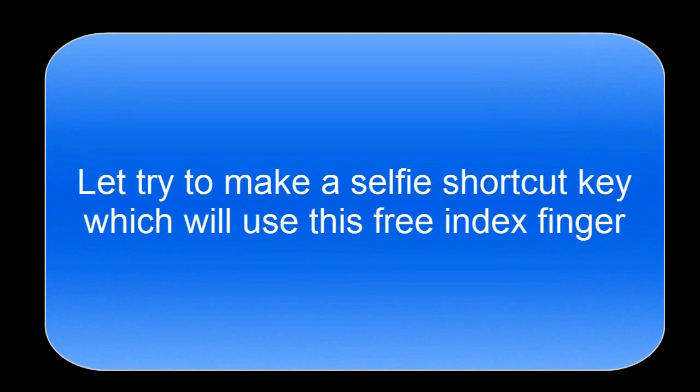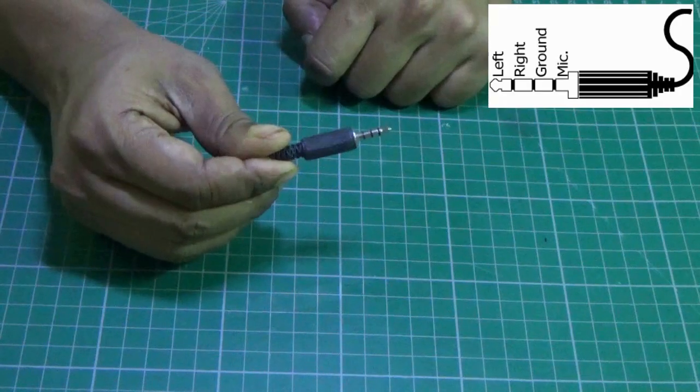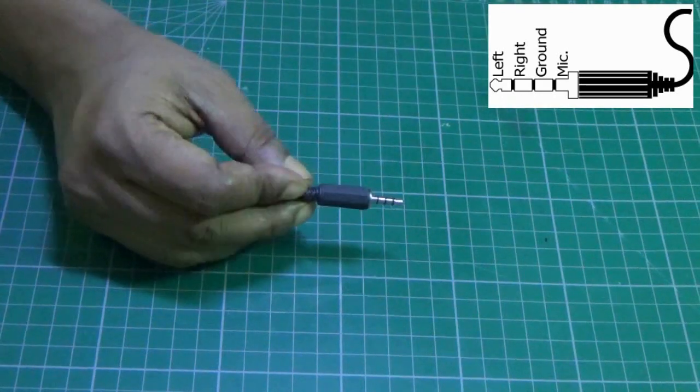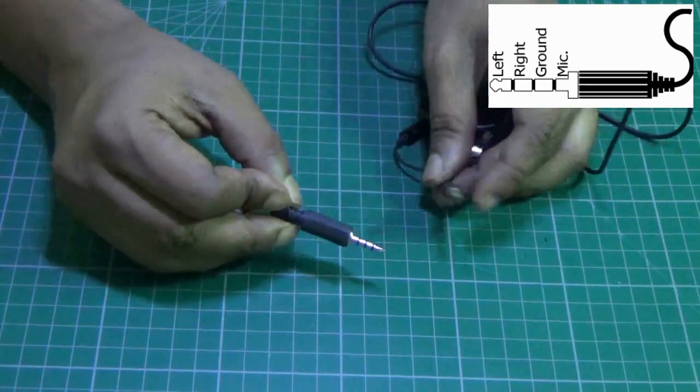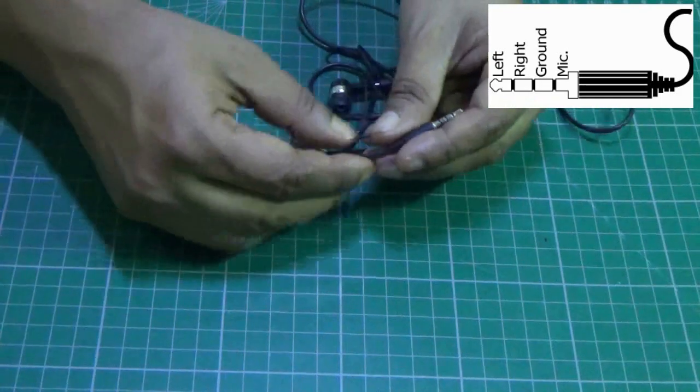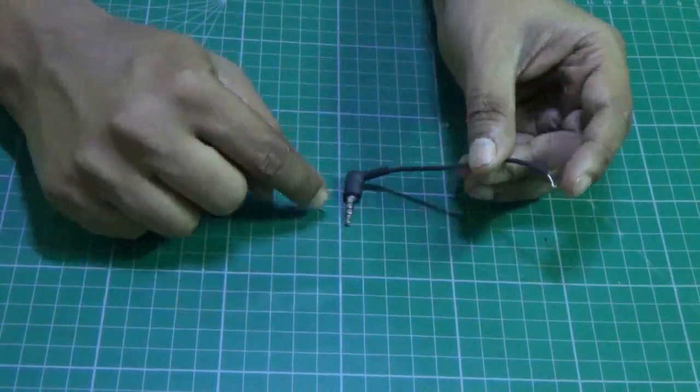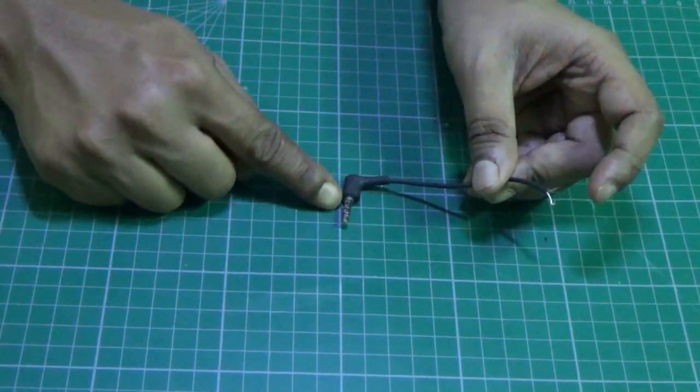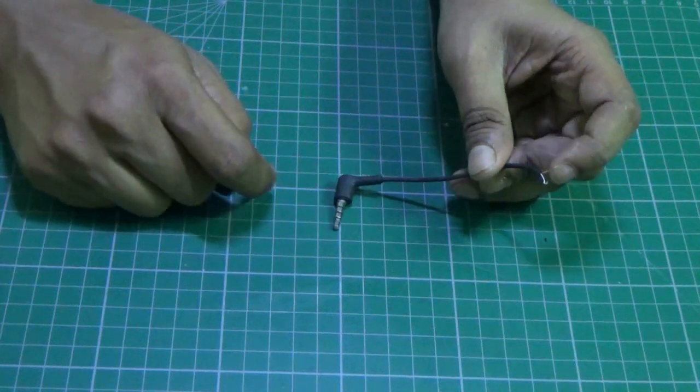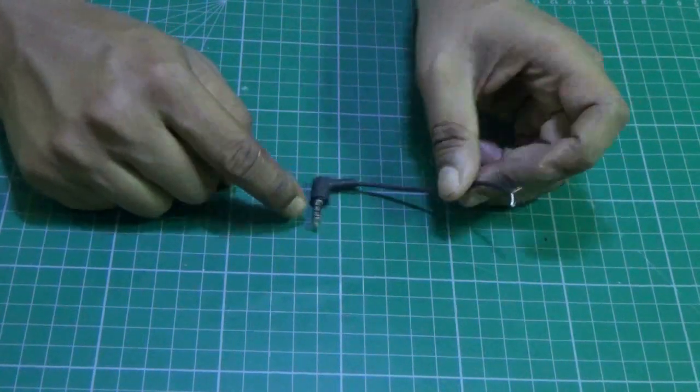Now use this index finger. For this you need an audio jack. You can get it from an old headphone set. I cut it from an old headphone set and I took the two wires out which is coming from the microphone and the ground pin.